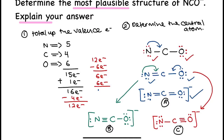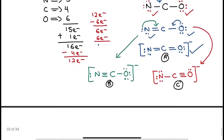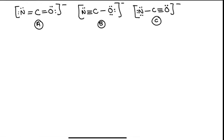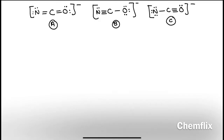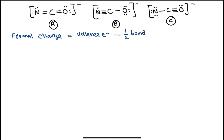As you can see, all three atoms are octet in all three Lewis structures. Now let's go on to the second part of the question, whereby you are required to determine the most plausible of the three Lewis structures. In order to do that, let me redraw the three molecules. To find the most plausible Lewis structure, calculate the formal charge of each atom in all three structures using the formula: formal charge = valence electrons − ½(bonding pair electrons) − lone pair electrons.